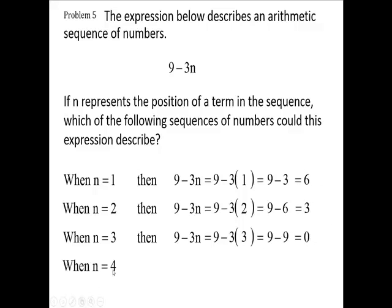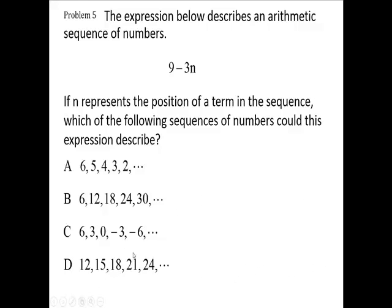Here we go, the fourth number. You're going to put a 4. 3 times, not 3, but 3 times. There's 3 times 1, 3 times 2, 3 times 3, 3 times 4, which is 12. And 9 minus 12 is minus 3. So 6, 3, 0, minus 3, and so on. We're going to pick this answer right here.